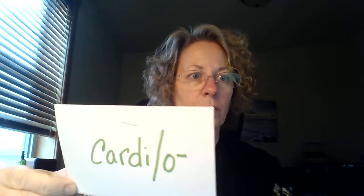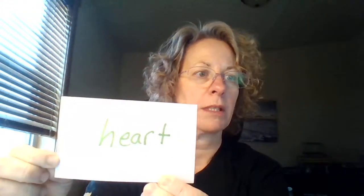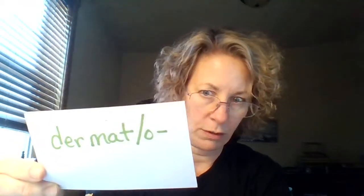Here are three examples of combining words. The first one is cardio, which when you turn it over, means heart. The next one is neuro, and when you flip it over, it means nerve. Another example is dermato, and when you turn it over, it means skin.